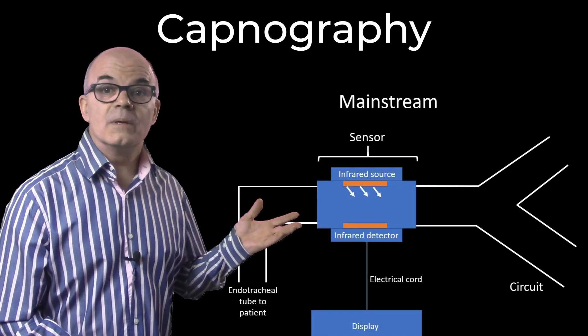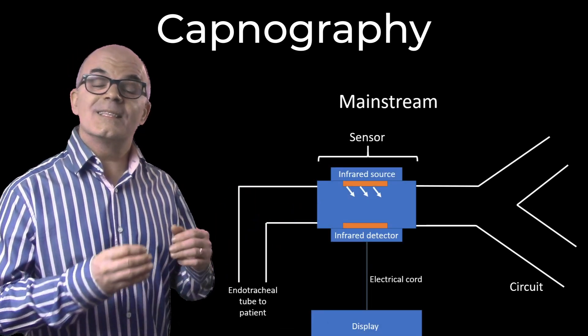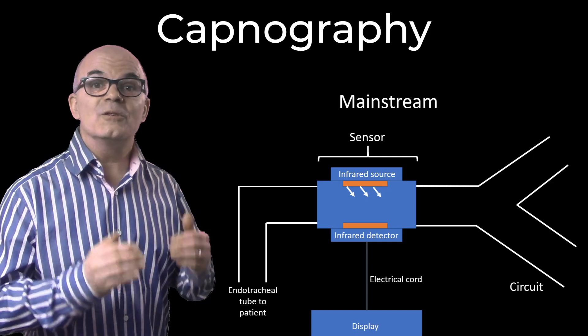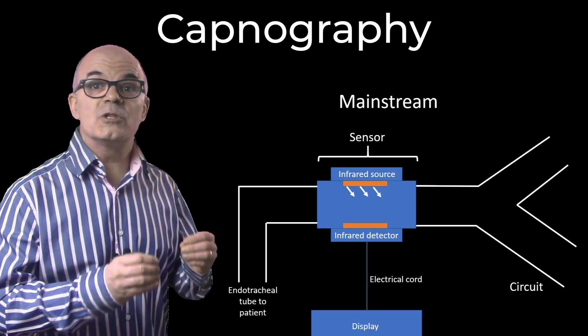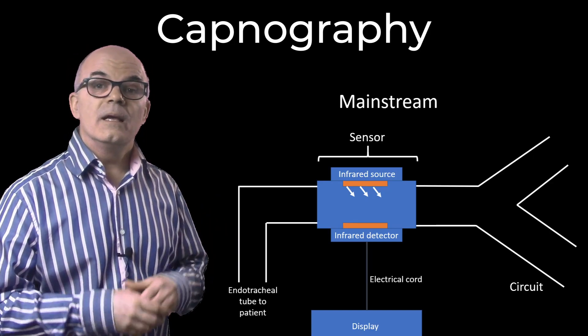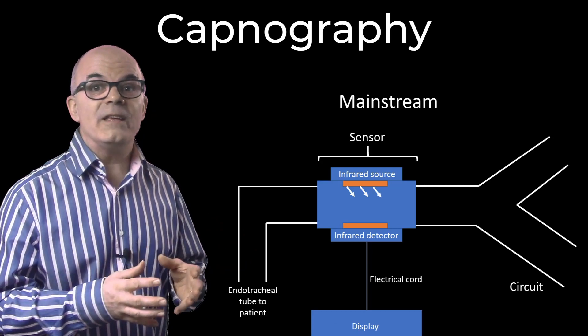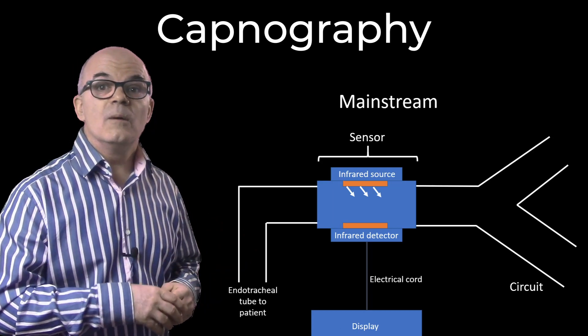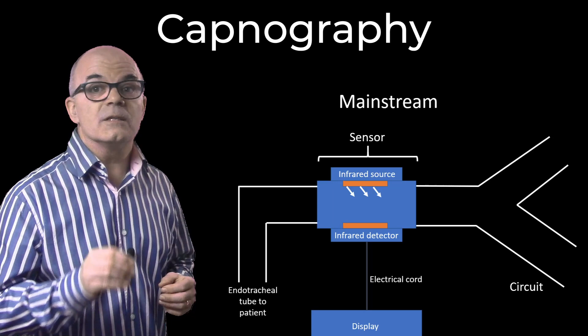Types. Mainstream. The CO2 detector sits in line with the endotracheal tube and detects the CO2 at that point. These can be rather bulky and heavy compared to the alternative, but they do give a more immediate reading.